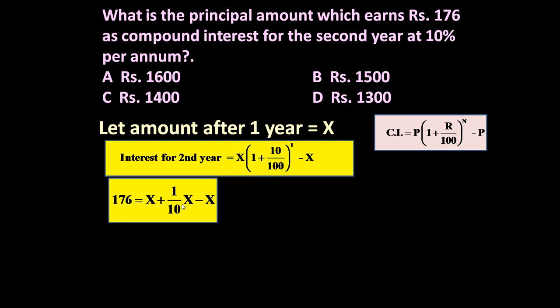So 176 is equal to X plus X by 10 minus X. If we simplify this, X will cancel and value of X will be 1760. So whatever amount is invested, it becomes rupees 1760 after one year.